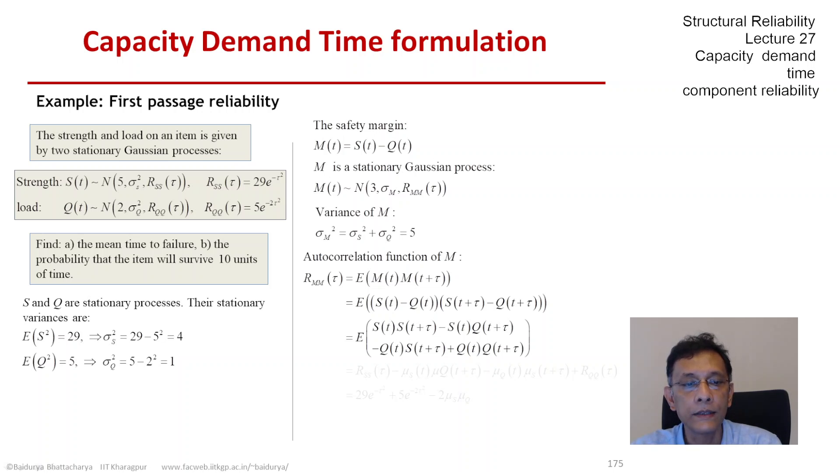We need to remember that S and Q are independent processes, so the expectation of their product will be the product of their expectations. Putting all of that together, we find that R_mm(tau) is the expression that includes R_ss(tau), R_qq(tau), and the product of the means.